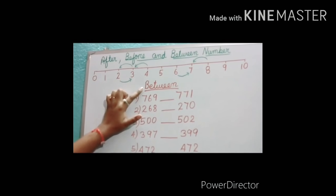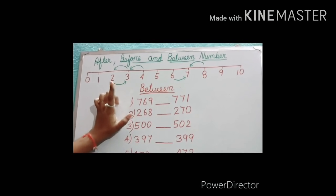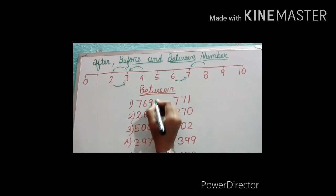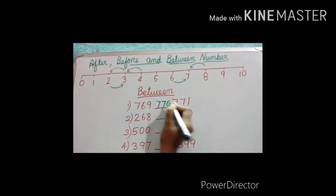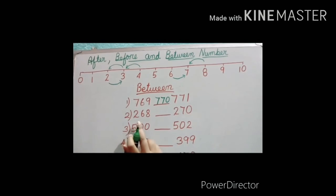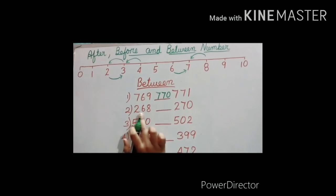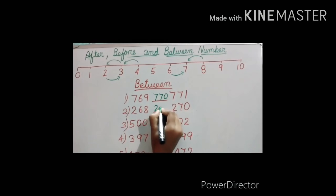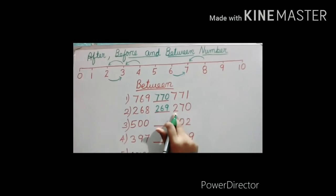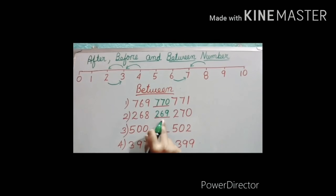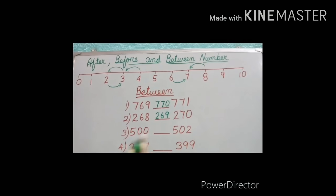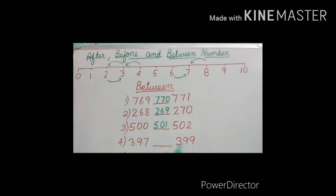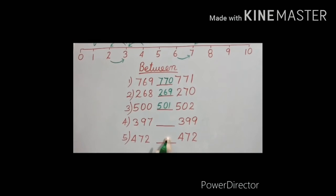Next is between numbers. Between numbers we will do like the after number. 769 and 771 — the between number is 770. Question number 2: 268 and 272 — after 268 is 269, and 269 becomes the between number. For 500 and 502: after 500 is 501, so the between number is 501. Questions 4 and 5 you will practice at home.